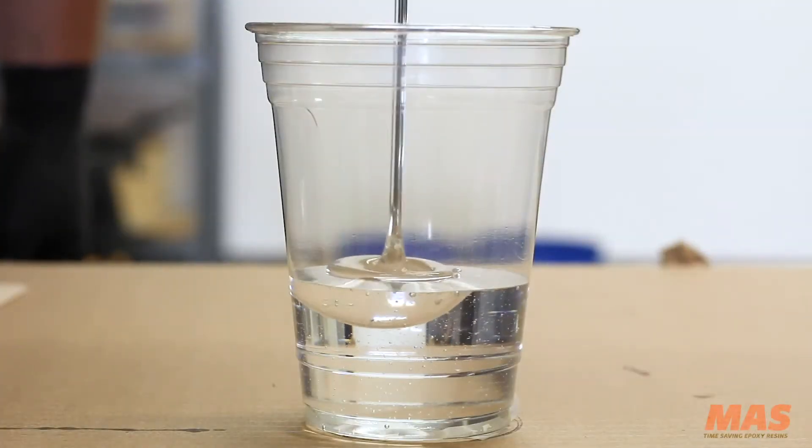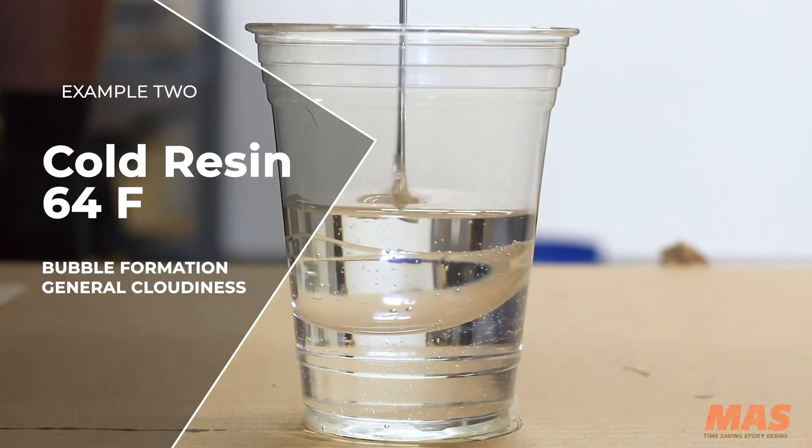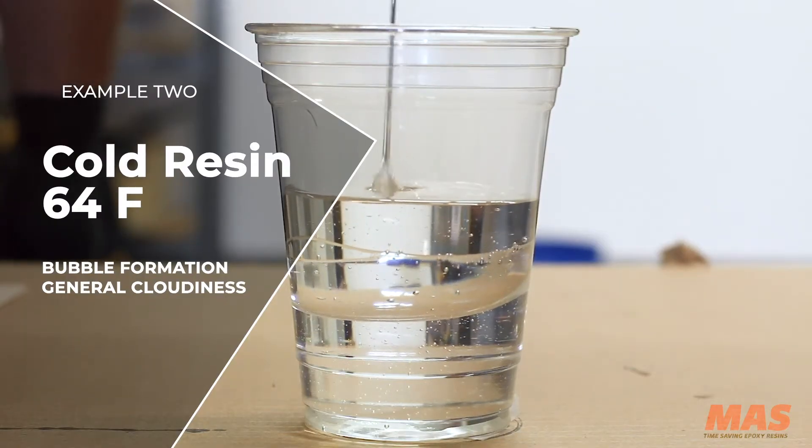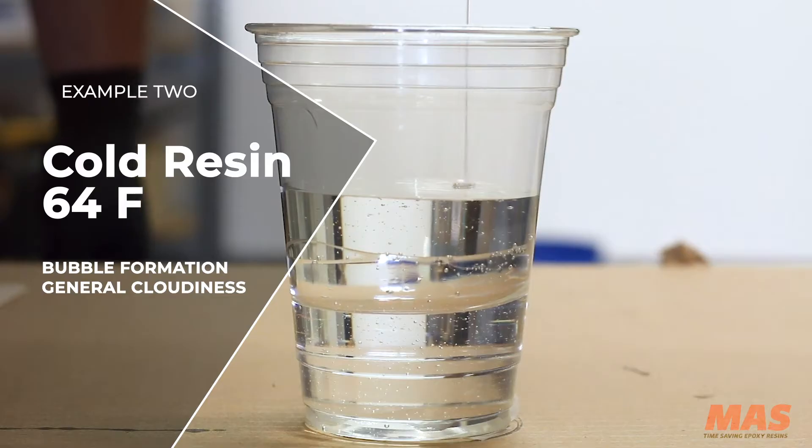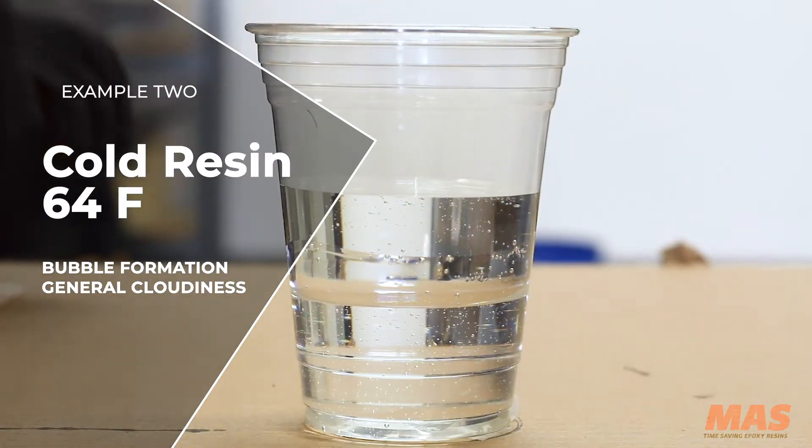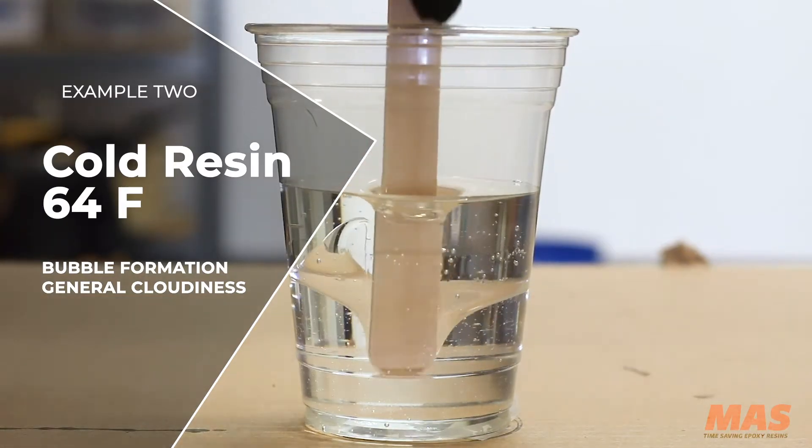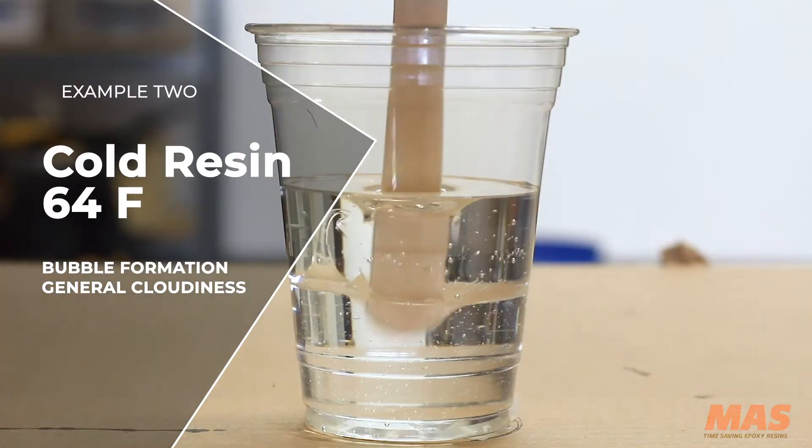For example two we're gonna take some epoxy resin that's chilly and try to mix it up. I can tell you right now at 64 degrees it's gonna be very thick, it's gonna be not enjoyable to mix, and you're gonna generate a lot of bubbles. You're gonna get cloudiness in it and those micro bubbles that form when you're whipping air into it—it's gonna be very difficult to get those to leave when you pour it out.